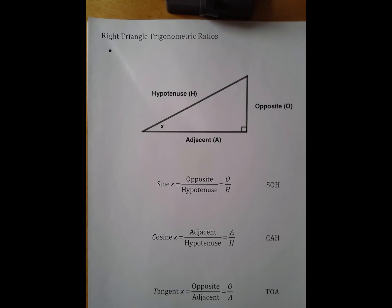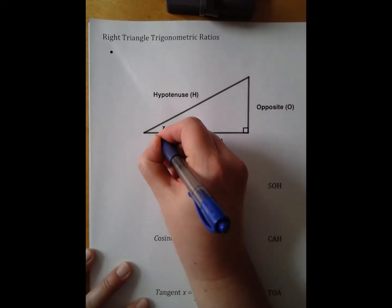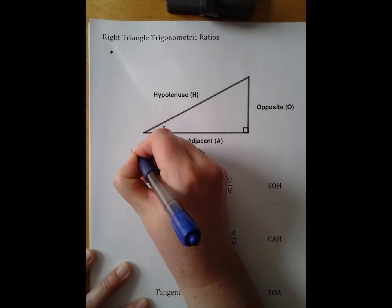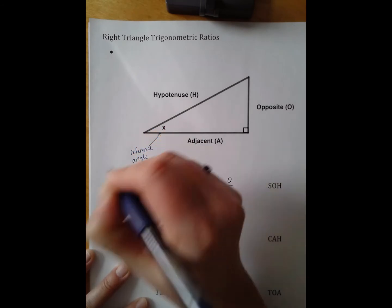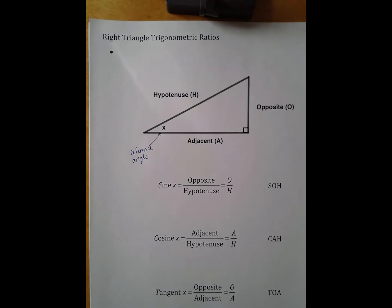So I need a reference angle, and in this case X is our reference angle. Once I have my reference angle, I need to name the three sides in reference, that's why we call it a reference angle, in reference to that angle.